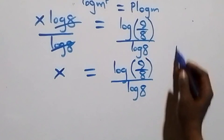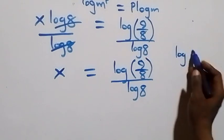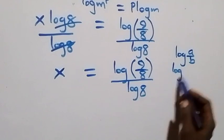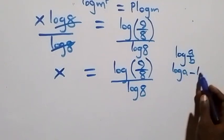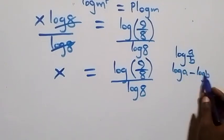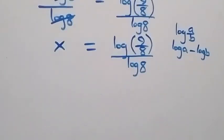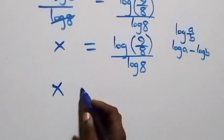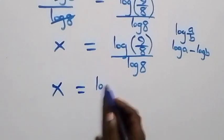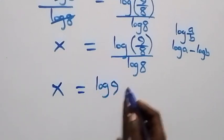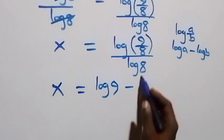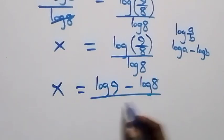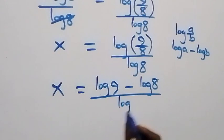From the log quotient rule, when we have log(a over b) this is the same thing as log a minus log b. So here this becomes x equals log 9 minus log 8, all over log 8.